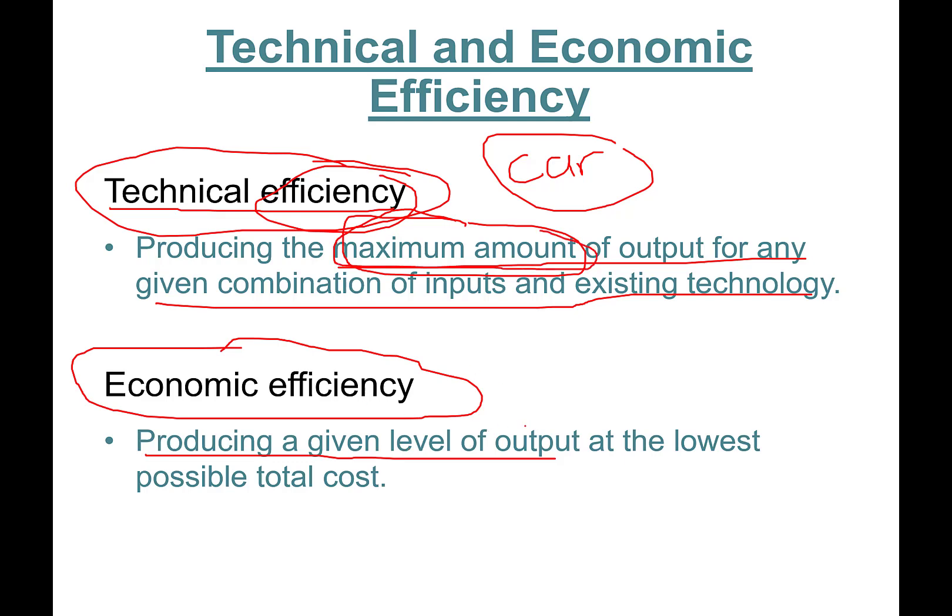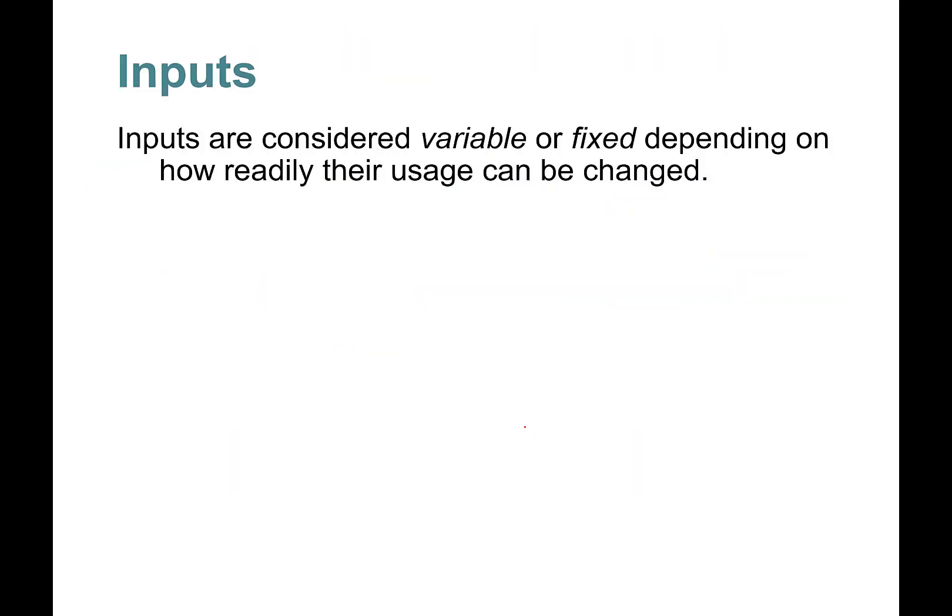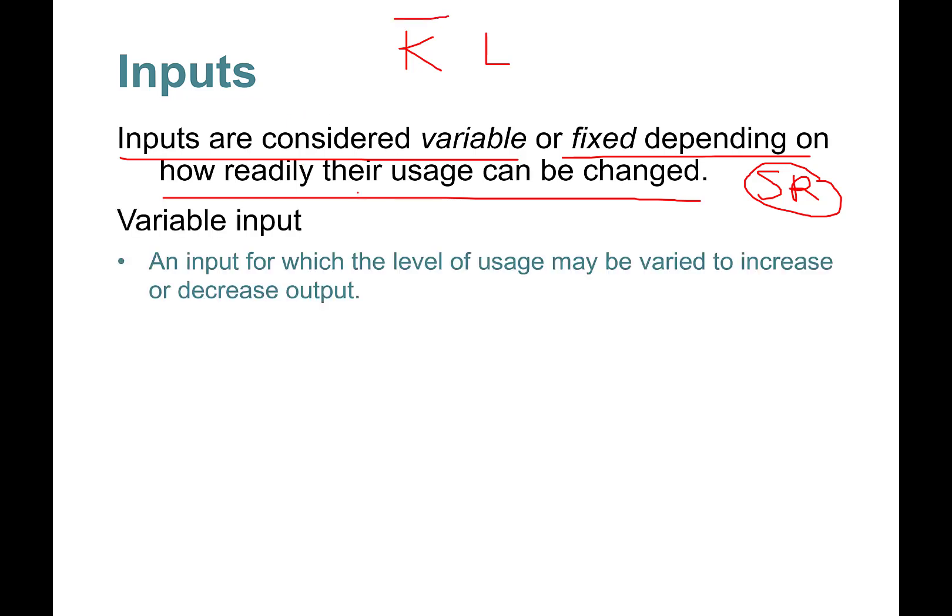Let's talk about inputs. We have capital and labor. For simplicity in production, inputs are considered variable or fixed depending on how readily their usage can be changed. In the short run, this is a short run phenomenon. A variable input is an input for which the level of usage may be varied to increase or decrease output. In the short run, labor is always variable.